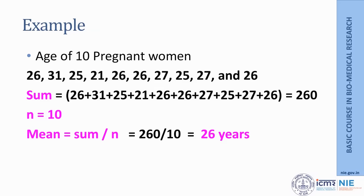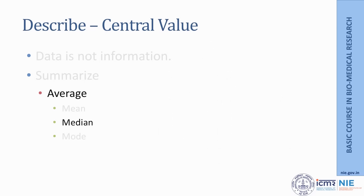For example, suppose there are ten pregnant patients who visited an ANC clinic and their ages are 26, 31, 25, and so on. The mean age is calculated by summing all the ages, which comes to 260, and dividing by ten, giving 260 ÷ 10 = 26. We say the mean age of pregnant women who visited the ANC clinic is 26 years.